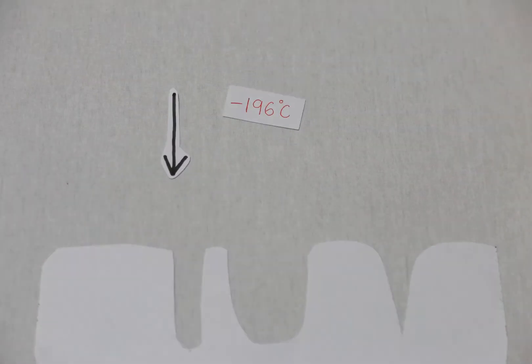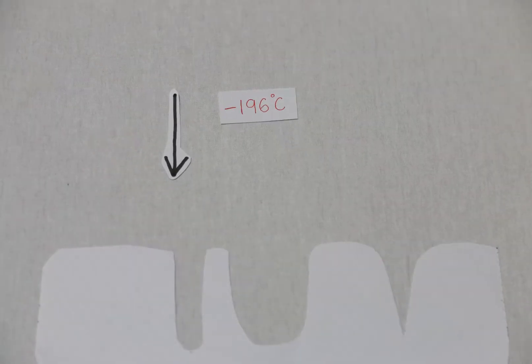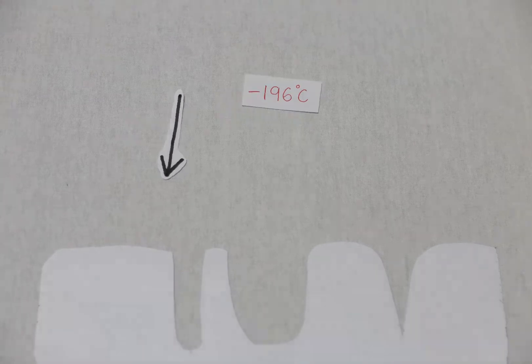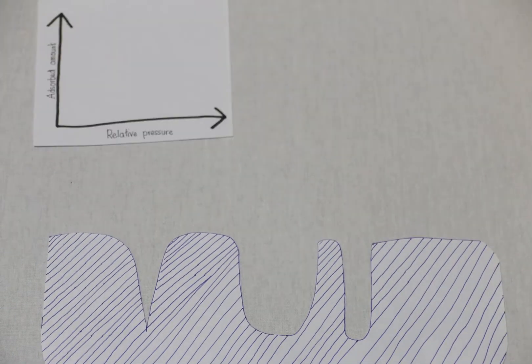First is the sample preparation—the removal of moisture and other contaminants that can interfere with the analysis. After preparation, the sample is evacuated, then cooled to cryogenic temperature, which is the temperature of liquid nitrogen.